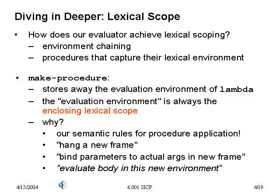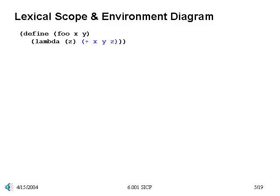How does this happen in practice? Look at make-procedure, on page 3 of the handout — it glues together a tag, the actual parameters, the body, and the environment in which it's evaluated. As a consequence, the evaluation environment is stored away and will always be the enclosing lexical scope, telling us where to look for a binding for a variable if we don't find it as a formal parameter. That was just the choice we made for our semantic rules: hang a new frame, bind the parameters to the arguments in that frame, and evaluate the body in this new environment, scoping frames based on where the procedures were actually defined.